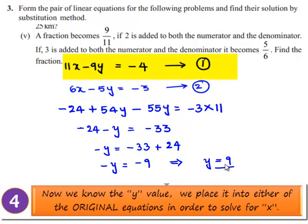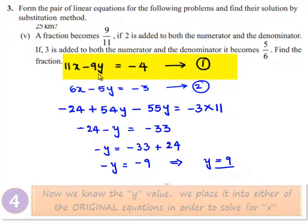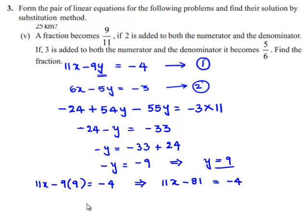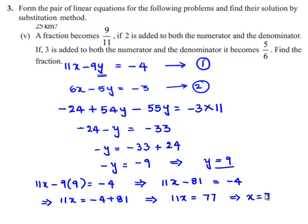Substituting the value of y in equation number 1: 11x minus 9 times 9 is equal to minus 4. That implies 11x minus 81 is equal to minus 4, which gives 11x is equal to minus 4 plus 81, which is 77. Therefore x is equal to 77 divided by 11, which is 7.